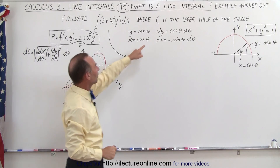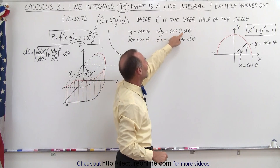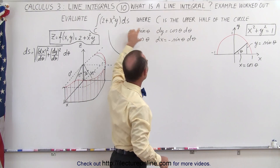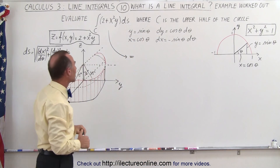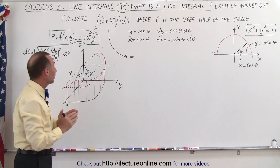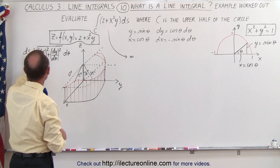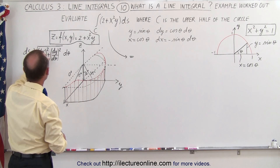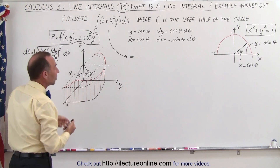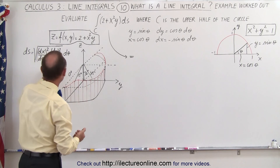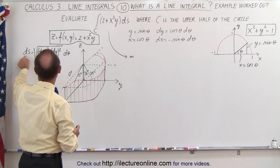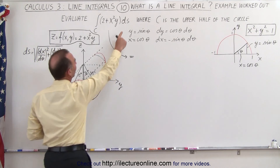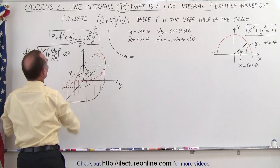Then the derivative — the differential dy will be cosine of theta d-theta, and dx will be minus the sine of theta d-theta — those are the differentials of x and y. Also notice that we have an expression for ds in terms of theta. ds will be equal to the square root of (dx/d-theta) squared plus (dy/d-theta) squared — that's essentially using the Pythagorean theorem — times d-theta. So we have an expression for ds and we'll use that substitution.